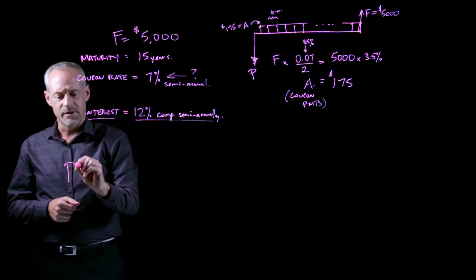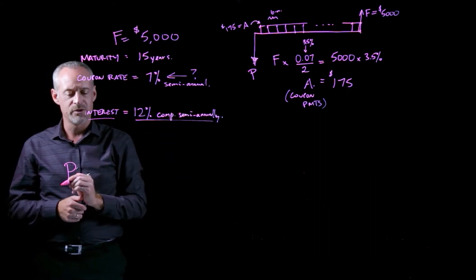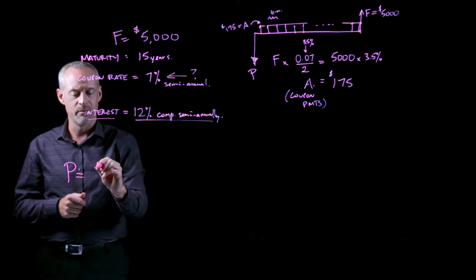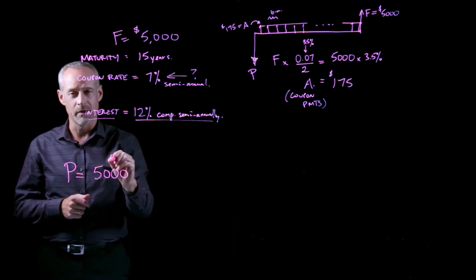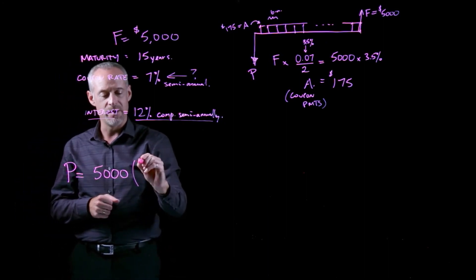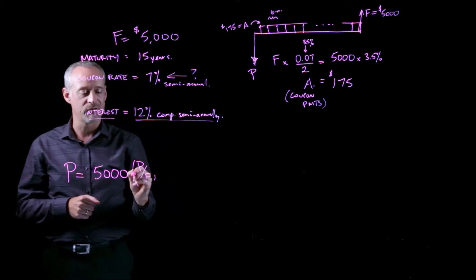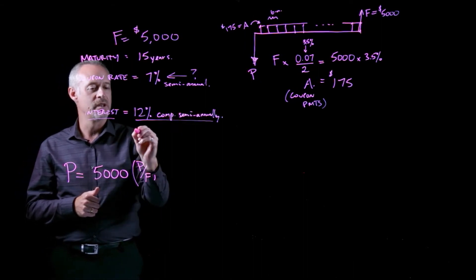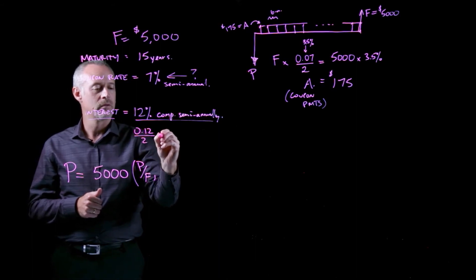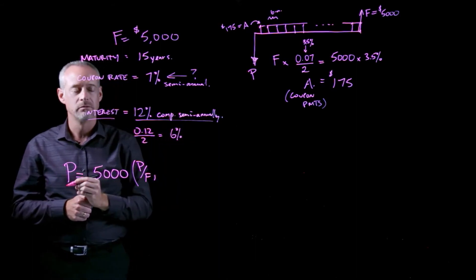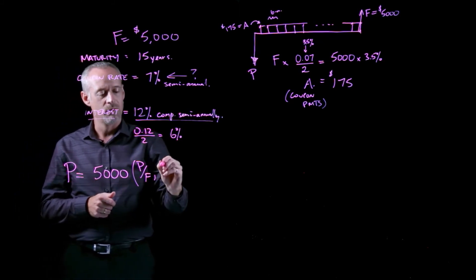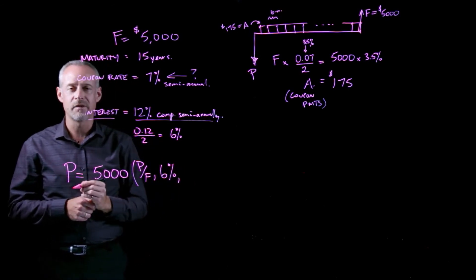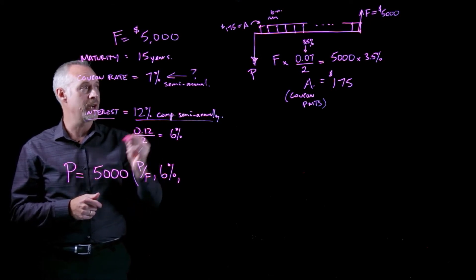We'll start like this and say the P is going to be equal to the sum of two things. The first thing we can deal with is that future amount of $5,000. If I take the $5,000, that's an F. I can multiply that by the P given F compound interest factor. If I expect to earn 12% compounded semi-annually, that's really 6% every six months. So I need to use 6% in the calculation of my compound interest factor.